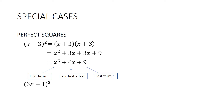Here's another one: (3x − 1)². First term squared is 9x², then minus 2 times 1 times 3x is −6x, and the last term is always positive because we're squaring the negative — negative 1 all squared is positive 1. So the answer is 9x² − 6x + 1.